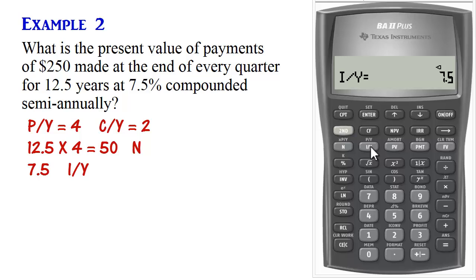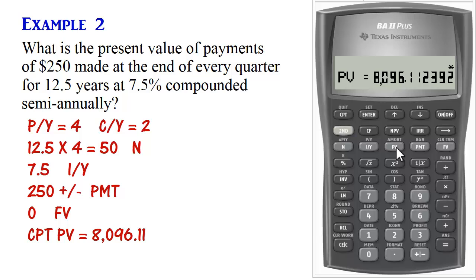We want to compute the present value. So we don't have that. We skip that for now. Payment is 250. So we enter that as 250, negative, payment. Since there is no future value, we set future value to 0, 0 future value. And then we compute present value. So the present value is $8,096.11.